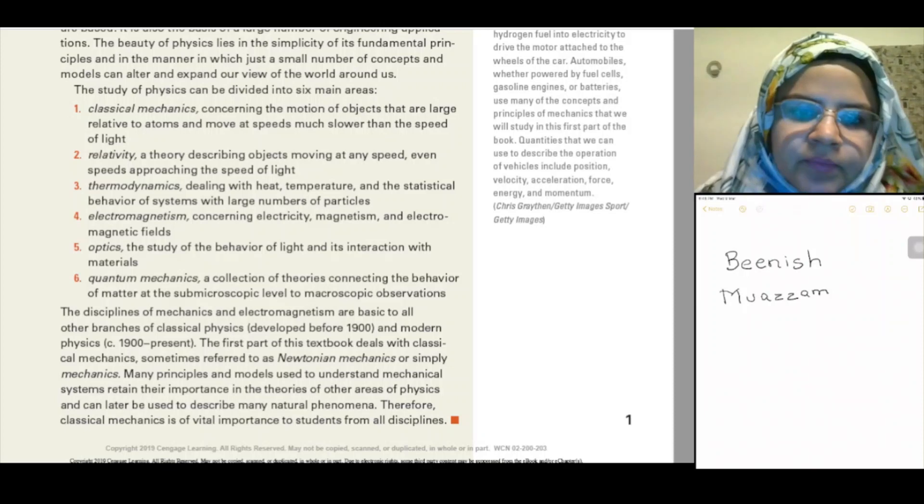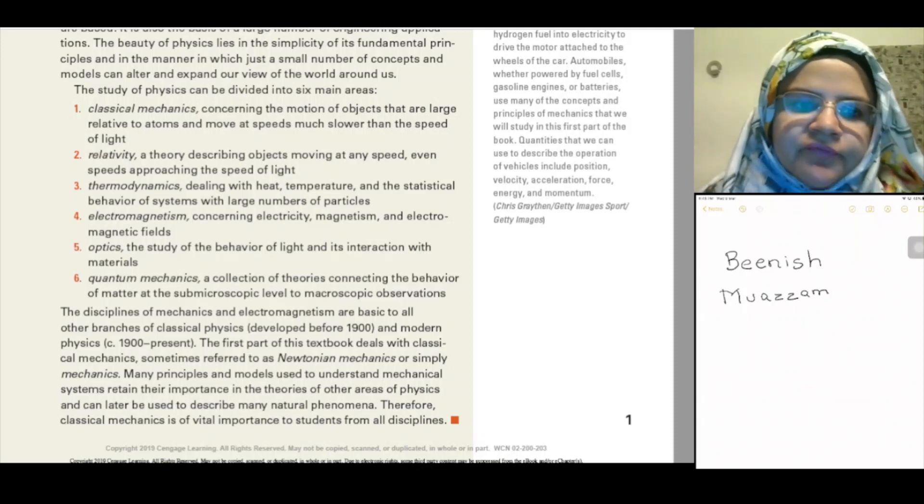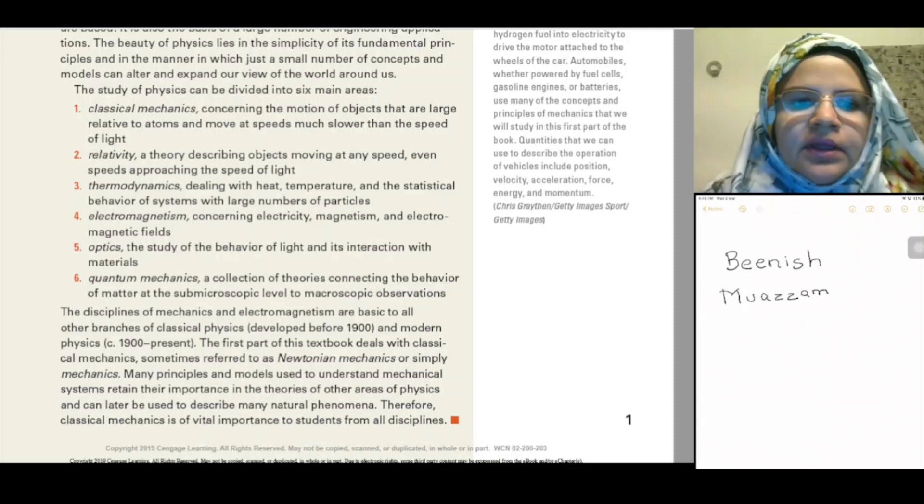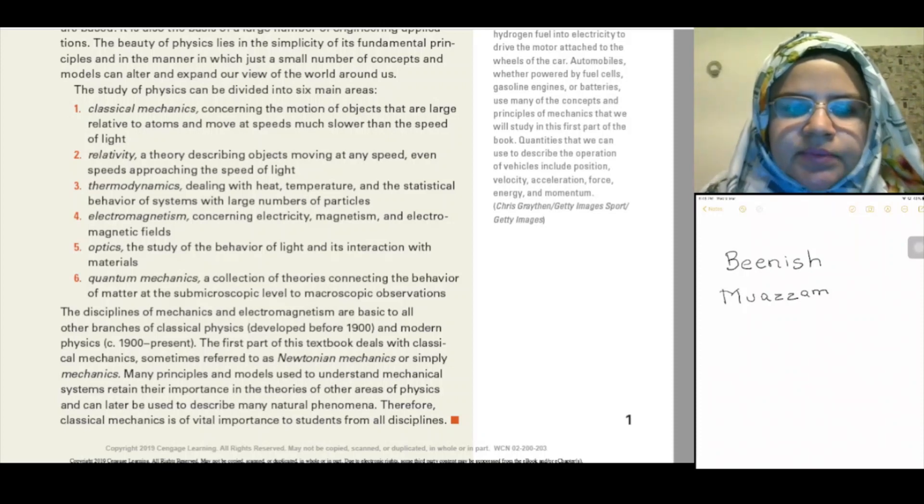The disciplines of mechanics and electromagnetism are basic to all other branches of classical physics developed before 1900 and modern physics 1900 to present. The first part of the textbook deals with classical mechanics, sometimes referred to as Newtonian mechanics or simply mechanics.